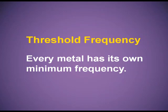Threshold frequency, that is nu-naught. Dear children, every metal has its own minimum frequency and a light with that minimum frequency must strike the metal surface to eject the electron. If a light with less than the threshold frequency strikes a particular metal, it will not eject electrons.